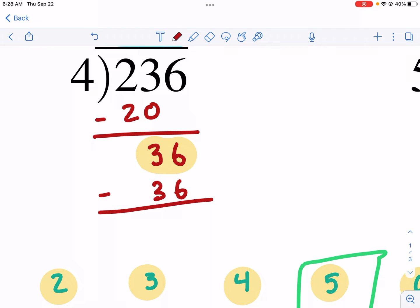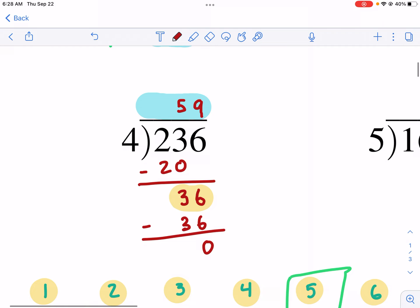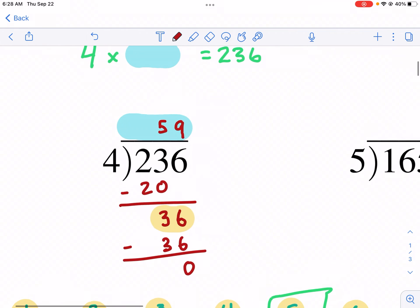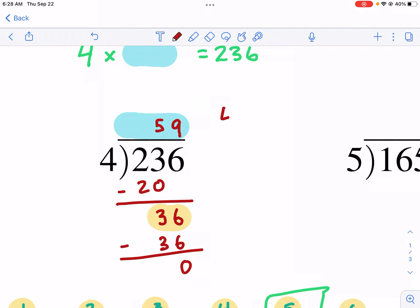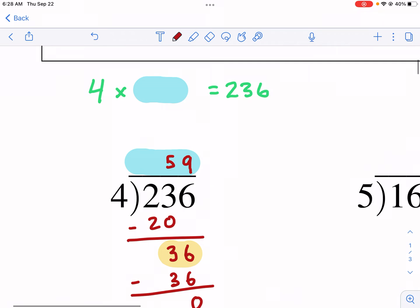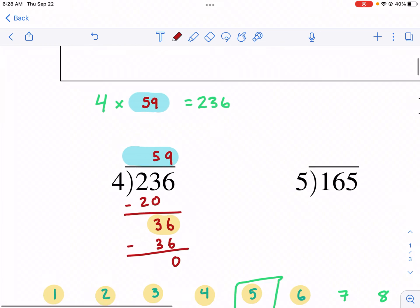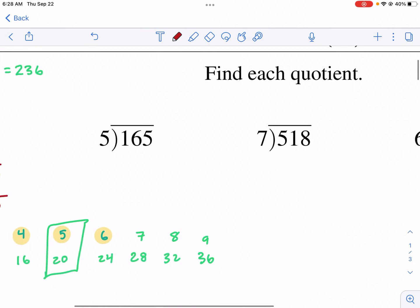And we do is we see if we have a remainder. So we do 36 minus 36, and that was 0. So guess what? Remainder 0. It's exactly 59. So the answer to this question, 4 times what equals 236? The answer is 59. And that's how we do this. And we can repeat this process with a different question.